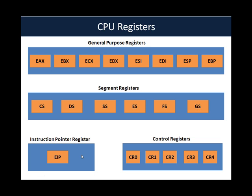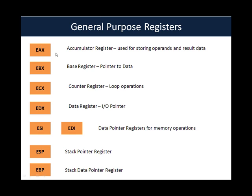EAX is the accumulator register, generally used for storing operands and result data. EBX, the base register, is generally used for storing pointers to data. ECX is the counter register, generally used in loop and string operations. EDX is the data register, generally also used as an input/output pointer. ESI is the source index and EDI is the destination index — both are data pointer registers used for various memory operations, more generally for string operations. ESP is the stack pointer register and always points to the top of the stack. If you don't know what the stack is, we'll deal with that in the next couple of slides.